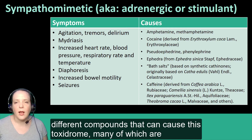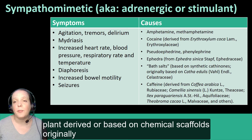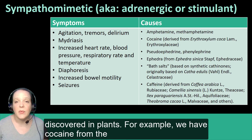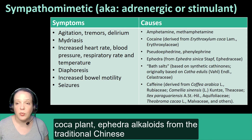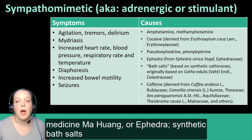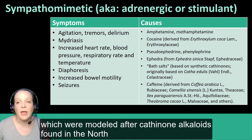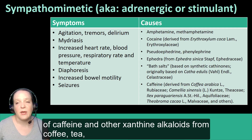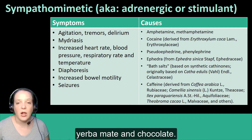There are many different compounds that can cause this toxidrome, many of which are derived from plants or are based on chemical scaffolds originally discovered in plants. For example, cocaine from the coca plant; ephedra alkaloids from the traditional Chinese medicine ma huang, or ephedra; synthetic bath salts, which were modeled after cathinone alkaloids found in the North African and Middle Eastern plant khat; and many different sources of caffeine and other xanthine alkaloids from coffee, tea, yerba mate, and chocolate.